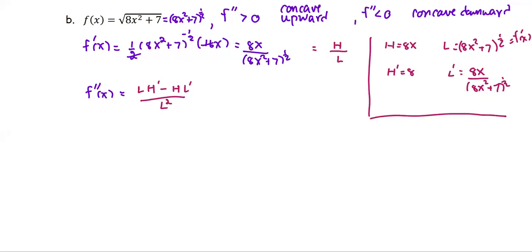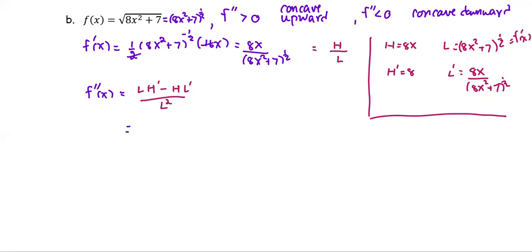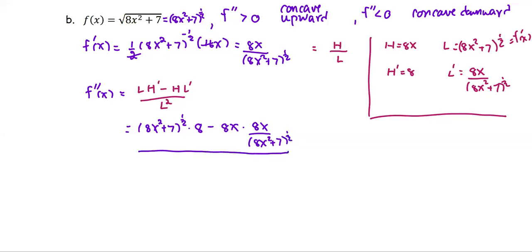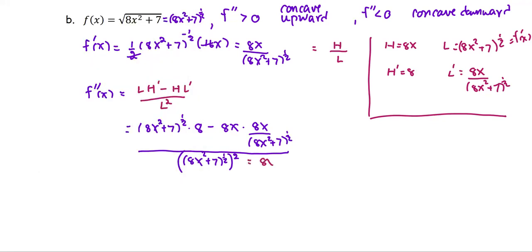Then put the terms into the formula. The second derivative will give us the low, which is the quantity 8x squared plus 7 to the power 1 half, times d high, which is 8, minus the high 8x, multiplied by d low, which is 8x over the quantity 8x squared plus 7 to the power 1 half. Draw the line and place low squared below — that is 8x squared plus 7 to the power 1 half, the whole thing squared. The denominator simplifies: since the power 1 half and 2 take care of each other to become power 1, the denominator is the quantity 8x squared plus 7.